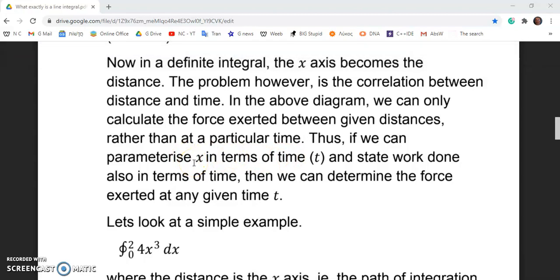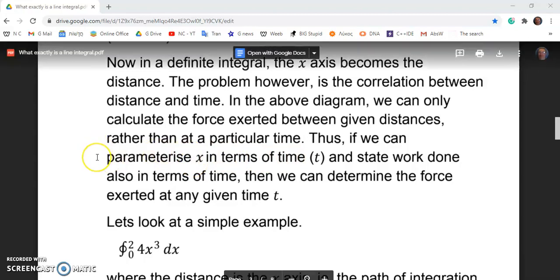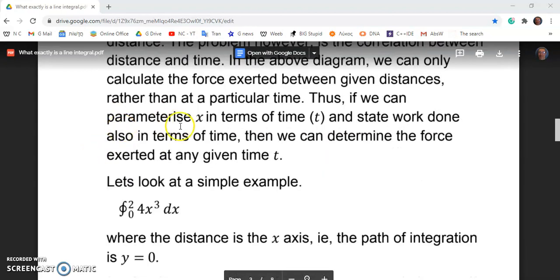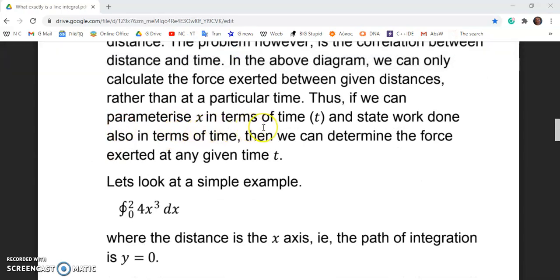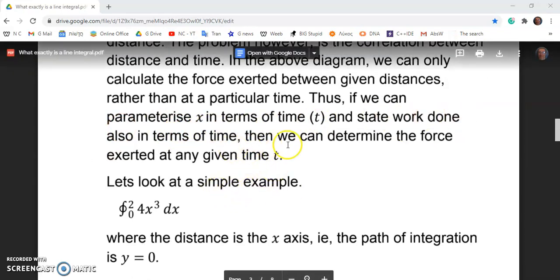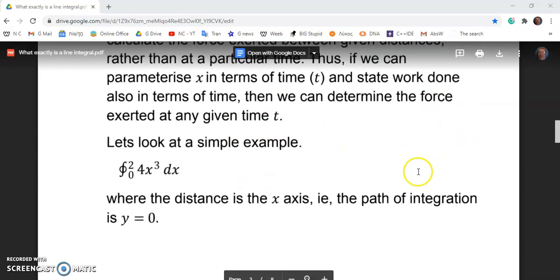So the problem is the correlation between the distance and the time. And in the above diagram, you can only calculate the force exerted between given distances and calibrated according to the units of the x axis. So thus, if we can parameterize x in terms of the time t and state the work done also in terms of time, then we can determine the force.